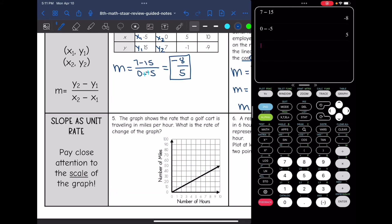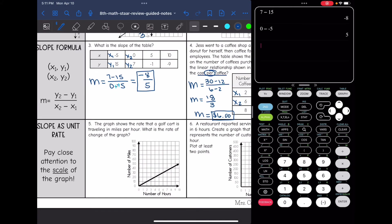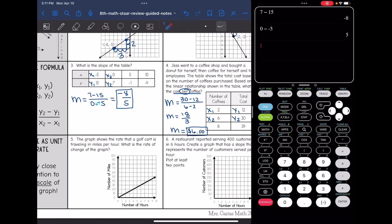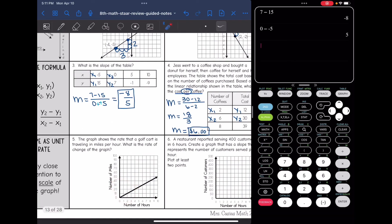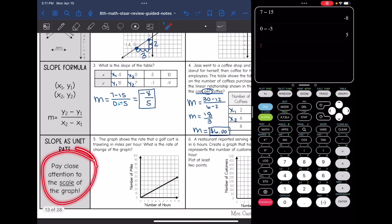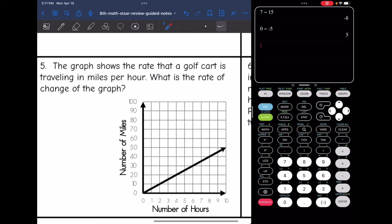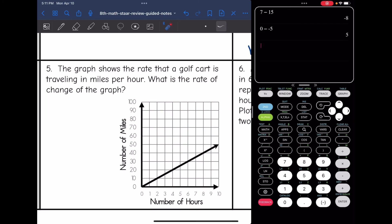The last thing we're going to look at is slope as unit rate. That is when we start at the origin, and you just want to make sure that you are paying close attention to the scale of the graph here. So number five says the graph shows the rate that a golf cart is traveling in miles per hour. What is the rate of change of the graph? So since they're asking for rate of change, they're just asking for slope.